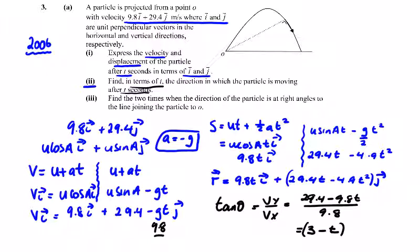Part 3: find the two times when the direction of the particle is at right angles to the line joining the particle to O. Here we're giving this diagram. So right angle. This here could be my velocity at time t.